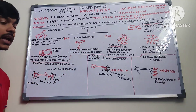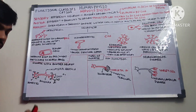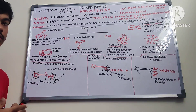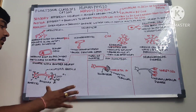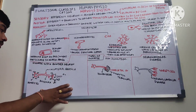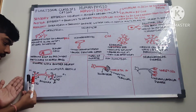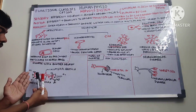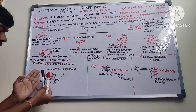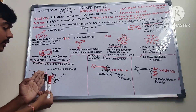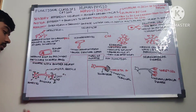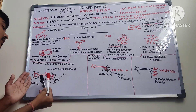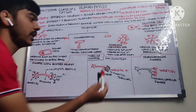Now let's come to the types of synapse. A synapse is where two neurons meet — it can be neuron-neuron, neuron-muscle, or neuron-gland. In a neuron-neuron synapse, the axon along with the synaptic vesicles and the synaptic knob touches the dendrites of the second neuron.